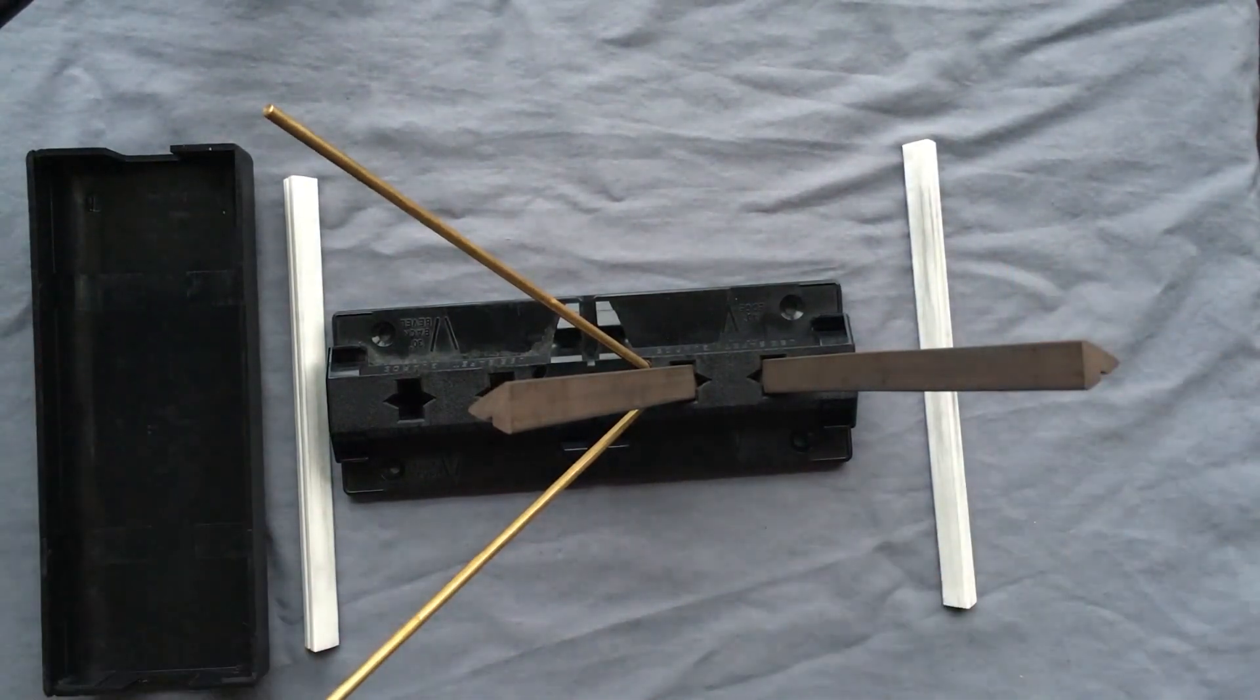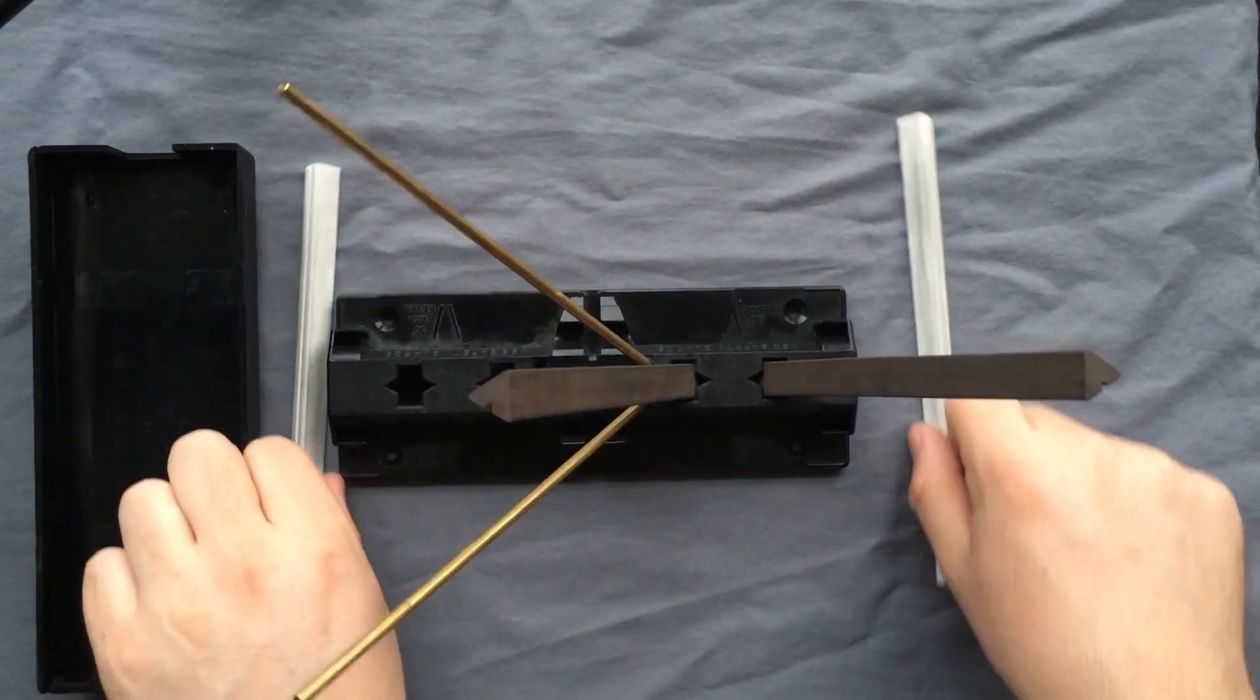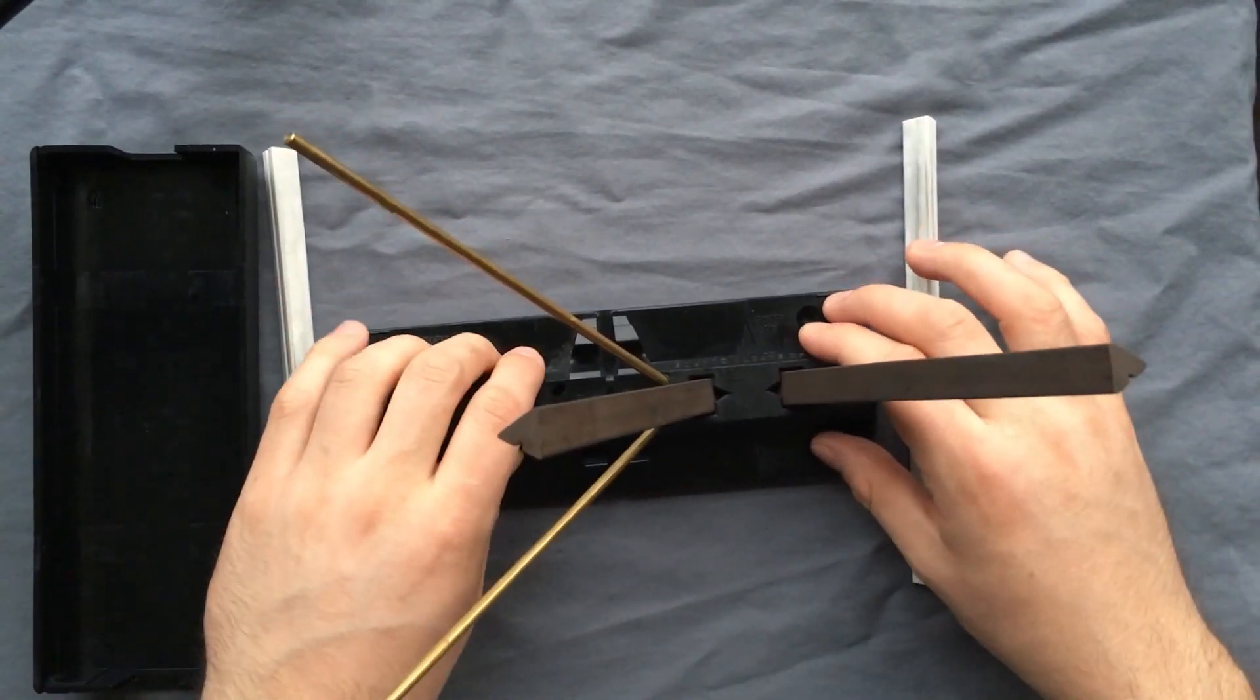Out of the box, this is what you get. You get two coarse rods, two bronze rods to keep you from cutting your hand off, and two fine rods alongside the base.